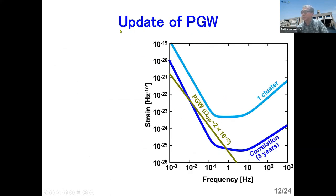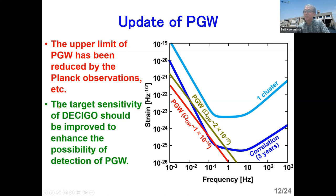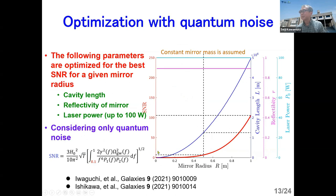So let me talk about the update of primordial gravitational wave things. So as I said before, the upper limit of primordial gravitational wave was this. Omega_gw corresponding to 2 times 10 to the minus 15. So at that time, we designed DECIGO so that we could detect PGW with a pretty good sensitivity. But the upper limit of PGW has been reduced by the Planck observations. And now around 0.1 hertz, the omega_gw, the upper limit of omega_gw is about 10 to the minus 16. So now you can see that DECIGO cannot detect PGW very well. So the target sensitivity of DECIGO should be improved to enhance the possibility of detection of PGW.